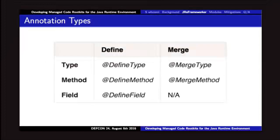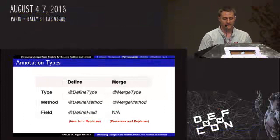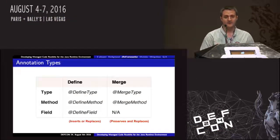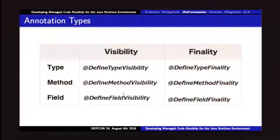We have quite a few different annotations — not too many actually. There are two main types: define and merge. A define type basically inserts or replaces the old behavior — sometimes you want to completely blow it away. But sometimes you want to preserve old behavior and just hook into it or add a subtle difference, then behave normally otherwise — that's what the merge type is. You can put these on a class, on a method, or on a field. We can also control the qualifiers: if a class is final and you can't extend it, you can basically just say 'nope, it's not' — and then extend it.